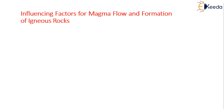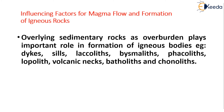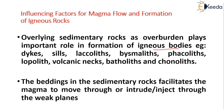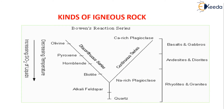What are the main influencing factors for magma flow and how are igneous rocks formed? Generally, the sedimentary rocks which are overlying as overburden rocks play a very important role mainly in the formation of igneous bodies like dykes, sills, laccoliths, bismalites, phacoliths, lopoliths, volcanic necks, batholiths, and chonoliths. This bedding in the sedimentary rocks helps to facilitate the magma, pushing it to come outside or to extrude or inject through the weak planes in the rock.